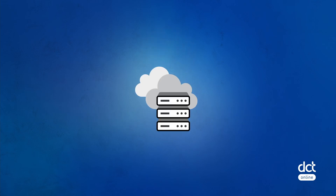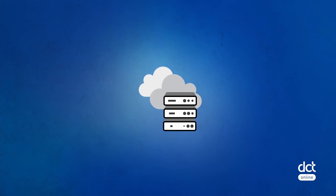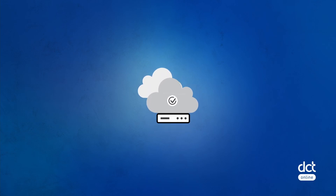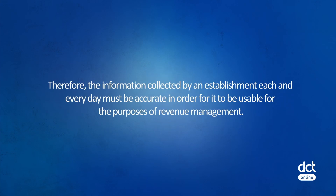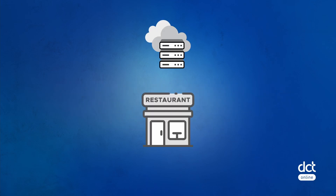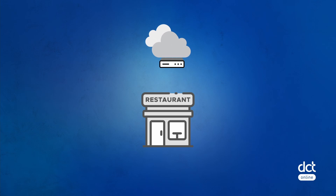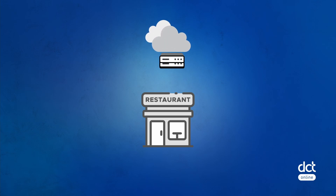Data lies at the heart of restaurant revenue management. Without it, there can be no analysis or informed decision making. Therefore, the information collected by an establishment each and every day must be accurate in order for it to be usable for the purpose of revenue management. With inaccurate data, a restaurant would be building strategies on misinformation, which can have a detrimental effect on revenue.